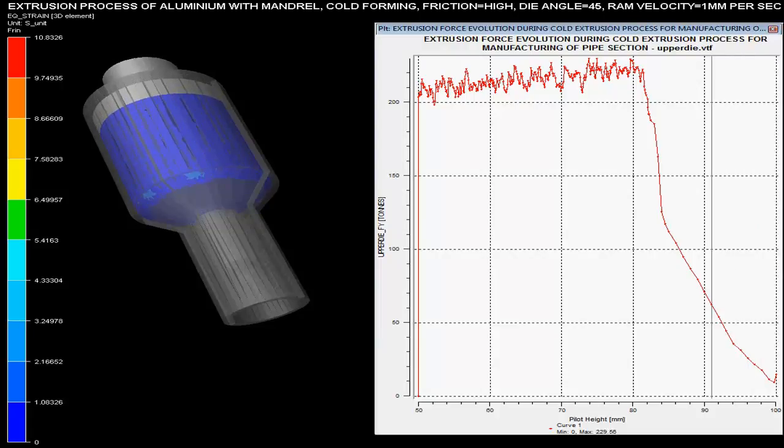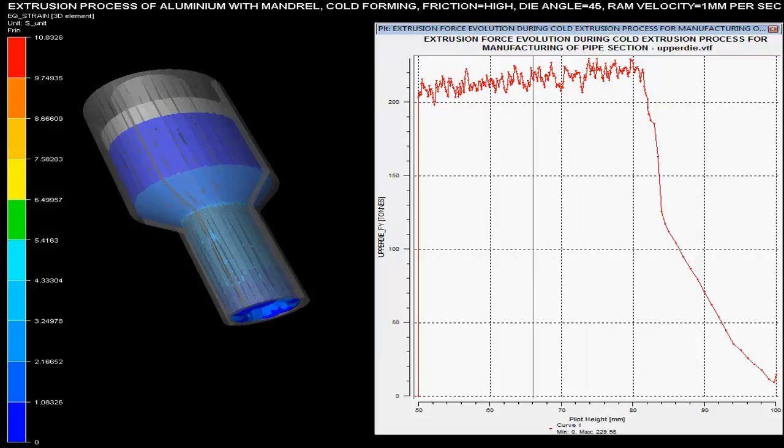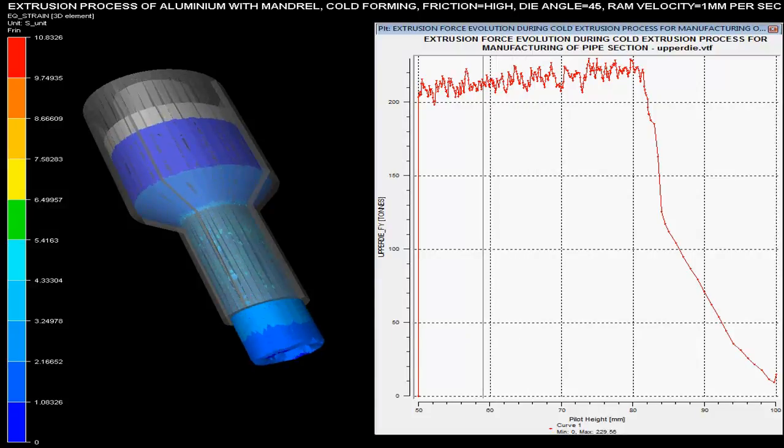Maximum force required during the process is about 250 tons. Ram velocity is set at 1 mm per second. Die angle is specified as 45 degrees with high friction during this cold extrusion process.